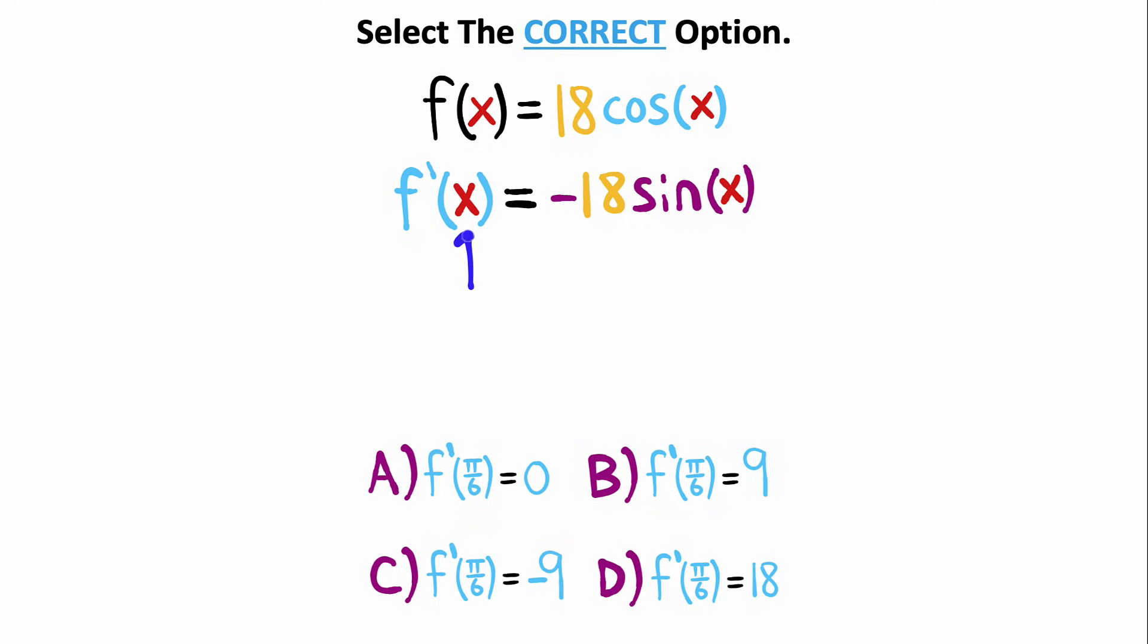And from here, I'm going to take every place that I see x and replace it with pi over 6. The sine of pi over 6 radians is 1 half, and 1 half of 18 is 9. So the solution to our problem is negative 9, and this matches with option c.